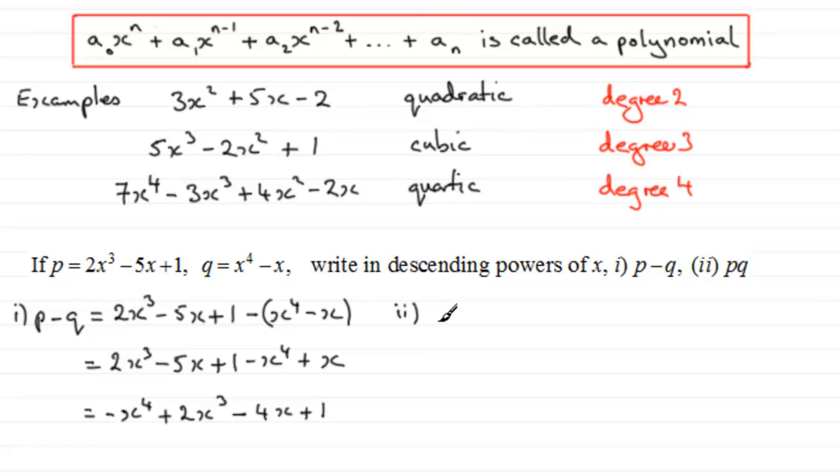Let's have a look at part 2 now, p multiplied by q. We'll write p then in brackets as 2x cubed minus 5x plus 1, and then we've got another bracket for the other one, q, x to the power 4 minus x. Certainly don't write this as 2x cubed minus 5x plus 1 multiplied by x to the power 4 minus x. I often see that type of thing written.